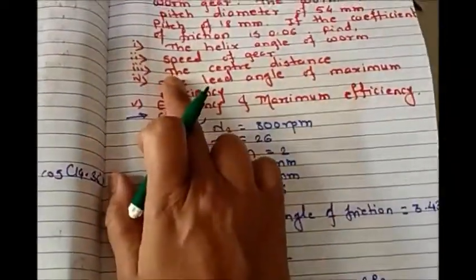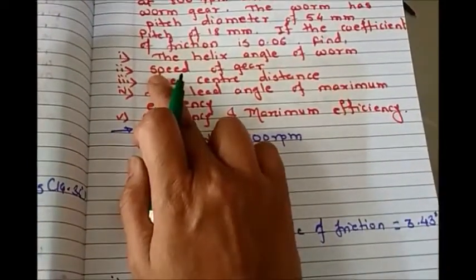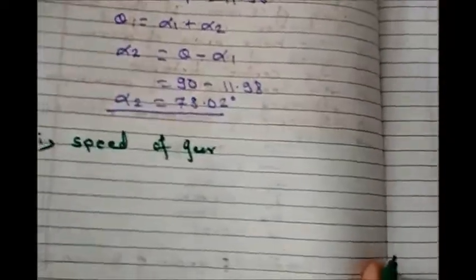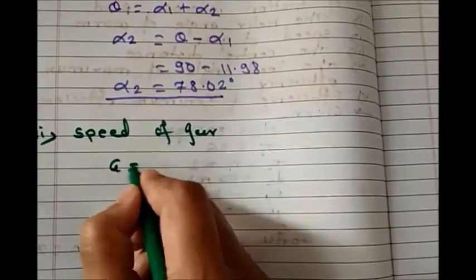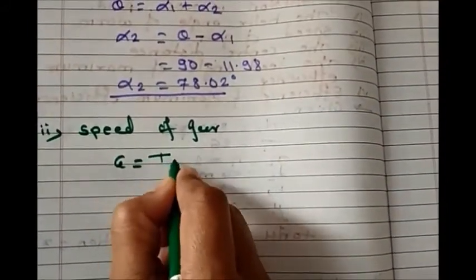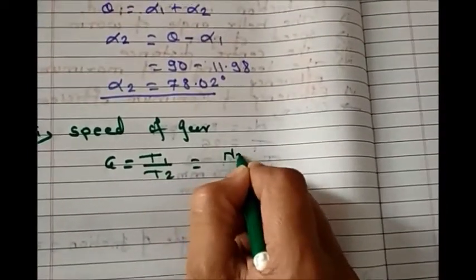Here we finish the first question, that is helix angle of worm. Now let's calculate the second: speed of gear. To calculate speed of gear, let's take gear ratio. Gear ratio equals t1 by t2 equals n2 upon n1.